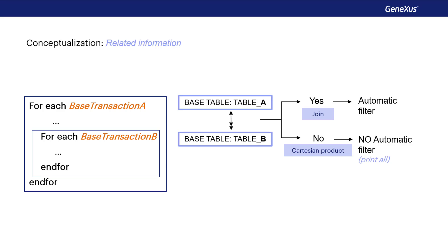Of course, the developer can always add explicit filter conditions by typing them directly in the forEach command with where clauses. In the following video, we will see what happens when the tables of the external and nested forEach commands are the same table.